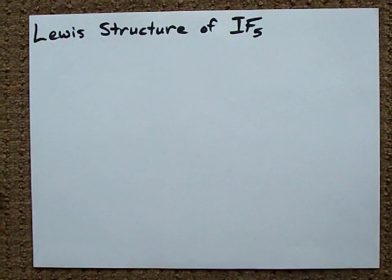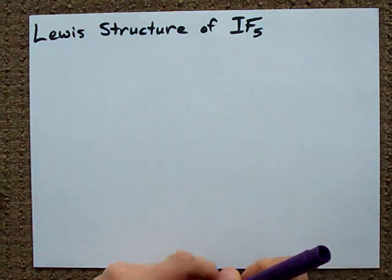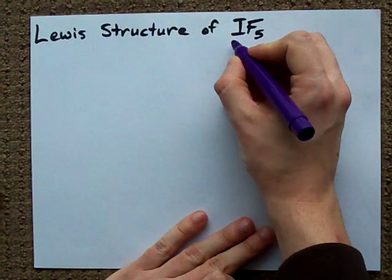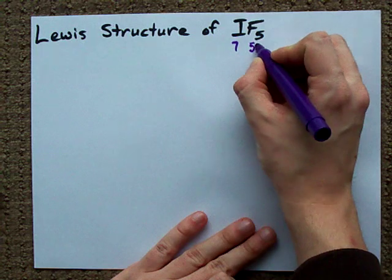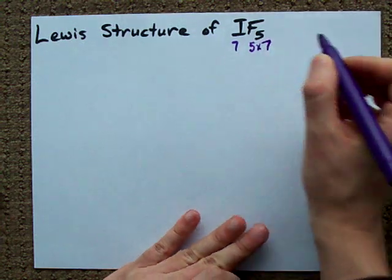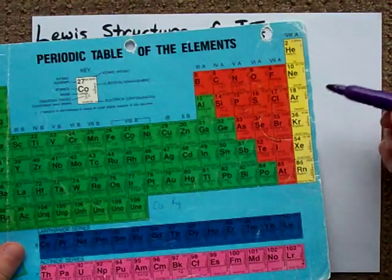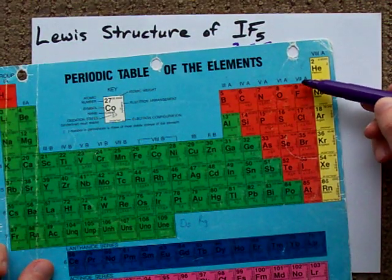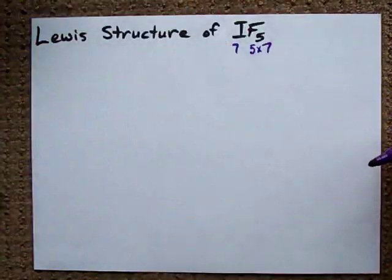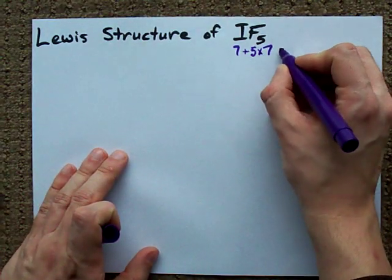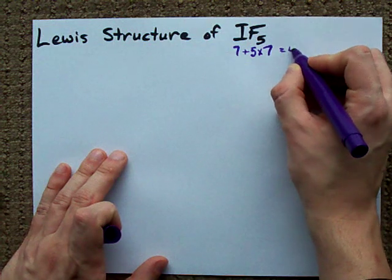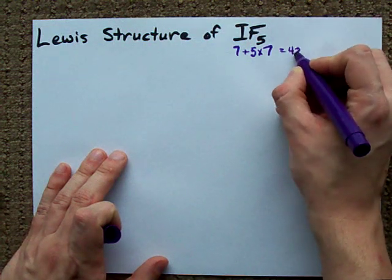Alright guys, the Lewis structure of IF5. First, how many electrons are there going to be here? Each iodine brings 7, each fluorine also brings 7. I know this because they're both in the 7th column of the periodic table. When I add those up, I end up with 42 electrons.